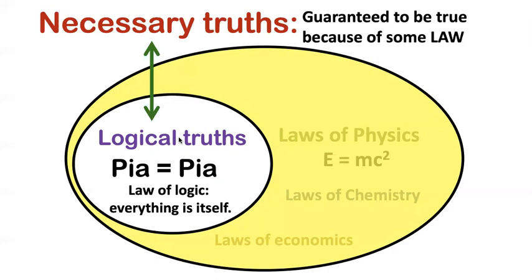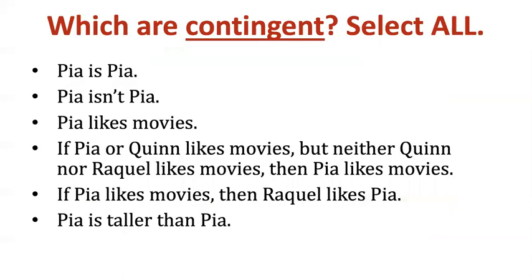Whenever I talk about sentences that have to be true — necessarily true and couldn't be false — I'm going to mean the things that are logically true. Now, what does necessary contrast with? The opposite of necessary is contingent. Pause your video, check out this same group of sentences, and decide which of these are contingent. Contingent means something different than just not being a logical truth — contingent means possibly true and possibly false.